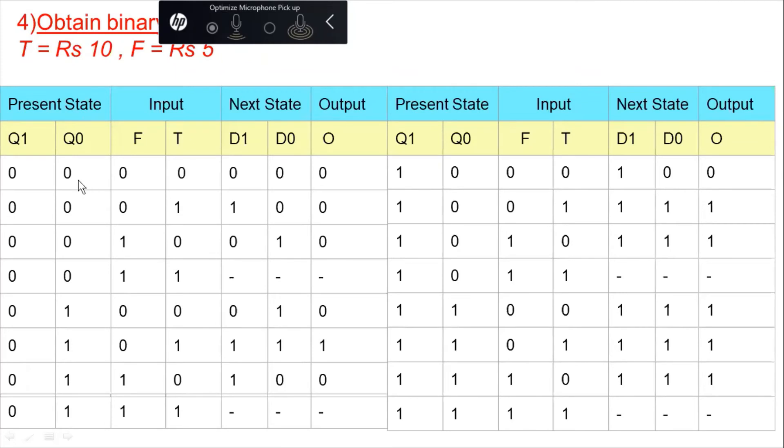For this instance, we see if we are at the initial state and we get input of rupees 10, then we will jump onto the next state that is 10. Remember that 10 is the binary value assigned to a state which tells that money is equal to 10 by now, and our output will remain 0 because the machine is not open by now.